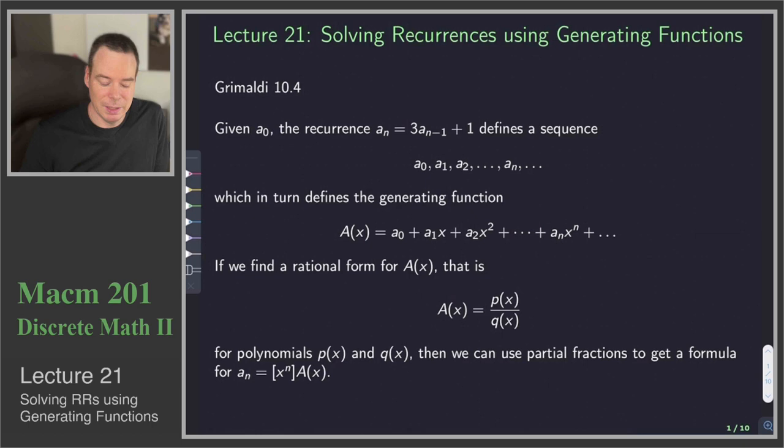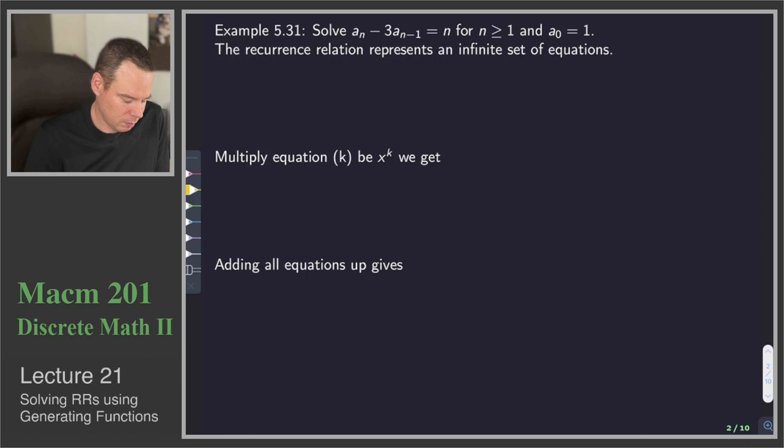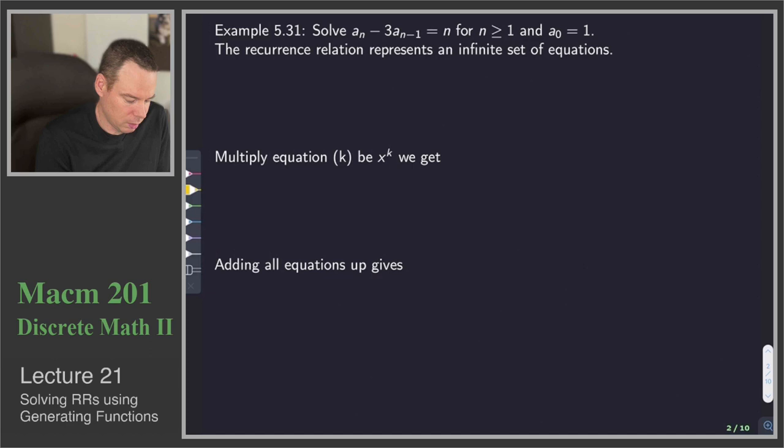Let's see how we can do this in practice. We'll start with the first-order recurrence relation: a_n minus 3a_{n-1} equals n, with initial condition a_0 equals 1. This recurrence relation represents infinitely many equations. We've got the initial condition a_0 equals 1.